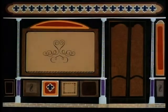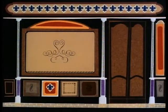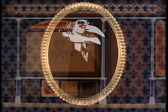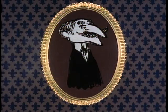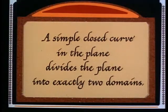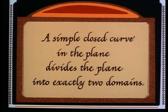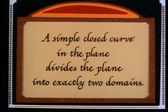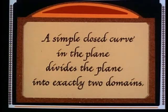About the turn of the century, the French mathematician Marie-Camille Jourdain stated: a simple closed curve in the plane divides the plane into exactly two domains.